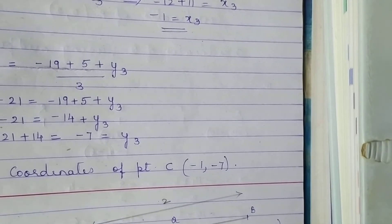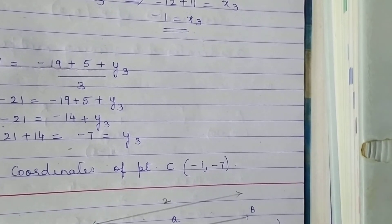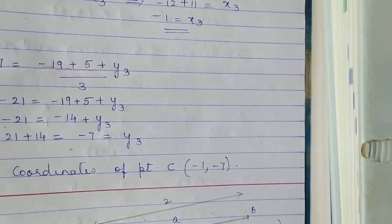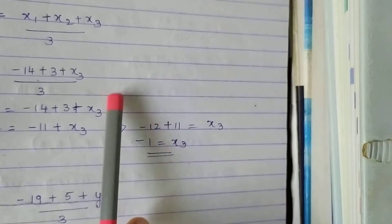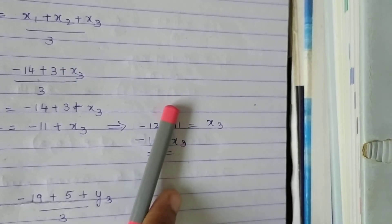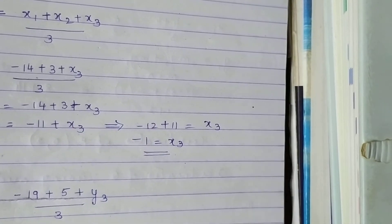We go to the next question, number 9. A(h, -6), B(2, 3), and C are coordinates of vertices whose centroid is (1, 5). Find h and k. Children, this is exactly the same method I showed you in question 8. You have to do question number 9 for homework and try it out on your own, because it is exactly similar to 8.